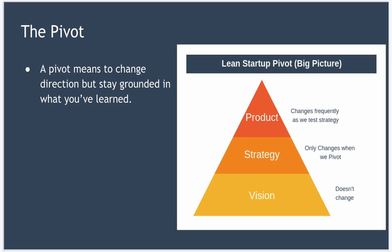Here are a couple of examples of some famous pivots. One startup found that their social check-in app was actually mostly used for photo sharing, so they decided to focus on that and do that one thing well — that company became Instagram. A second company found that nobody was using their mobile app for shopping, but they did discover that users were creating and sharing wish lists — that company became Pinterest.